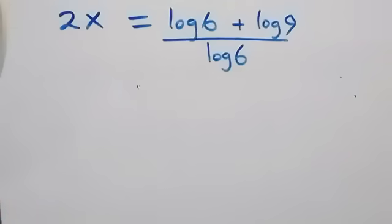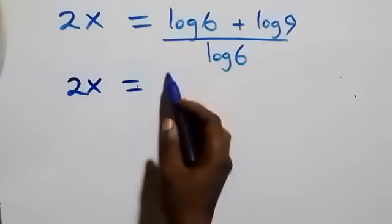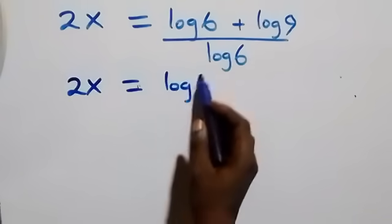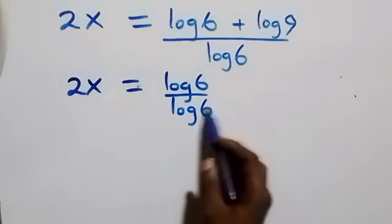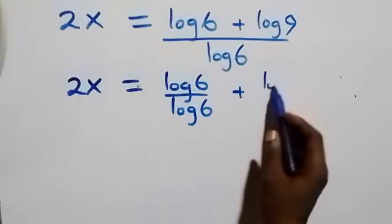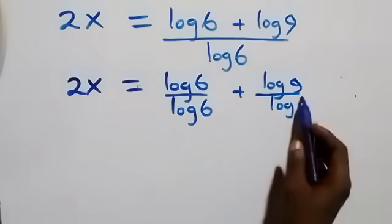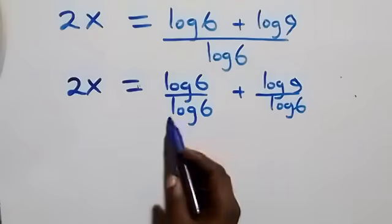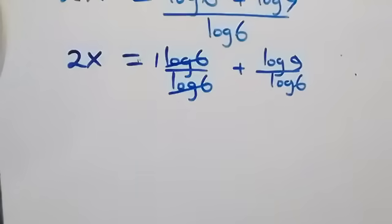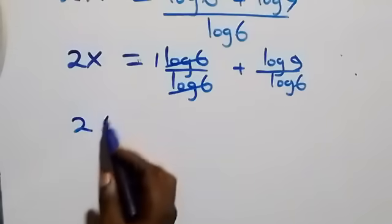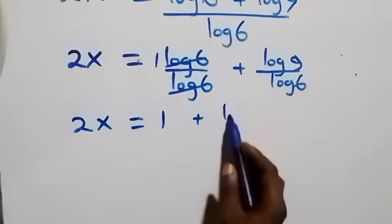We split the fraction: 2x equals log 6 over log 6 plus log 9 over log 6. Log 6 over log 6 cancels to give 1, so this becomes 2x equals 1 plus log 9 over log 6.